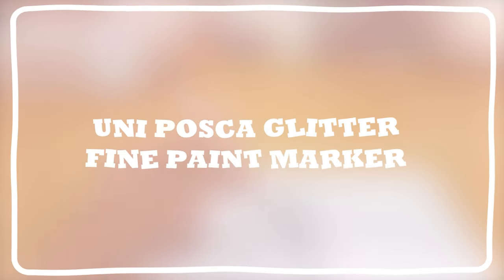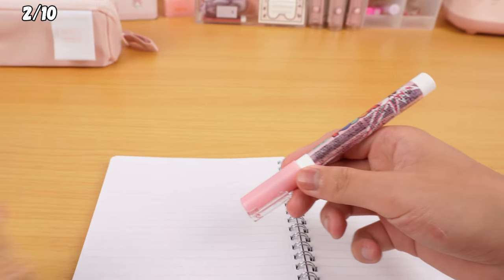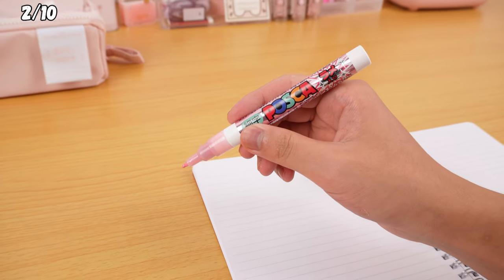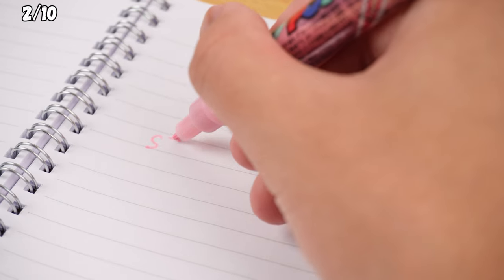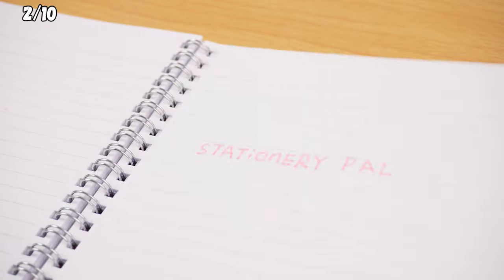Speaking of shakable pens, check out this one. The Uni Posca Glitter Fine Paint Marker. This pen is perfect for crafting cards or doing some writing and drawing. It's water-based and works on all sorts of surfaces, like paper and glass, without bleeding through.